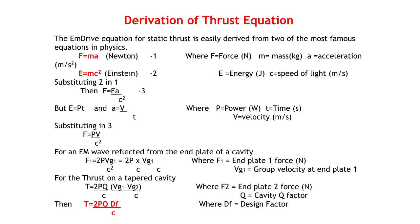This equation can be conveniently written as T = (2pQ/c)×Df, where Df is the design factor which is dependent on the diameter of the two end plates.